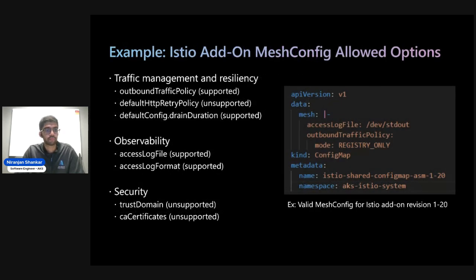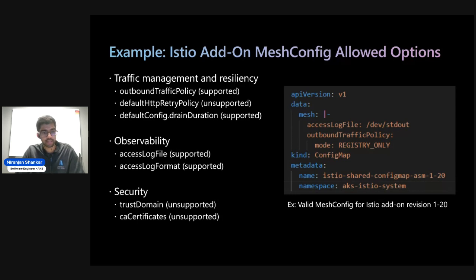Here are some examples of different mesh config options that are allowed. Some are allowed and supported, some are allowed but unsupported. For instance, for traffic management you could use outbound traffic policy — that's supported — whereas something like HTTP retry policy is unsupported; you could use a different custom resource for that instead. Other examples include access logging for observability, and trust domain and CA certificates for security-related mesh config options. We also have other examples in our documentation and troubleshooting guides.